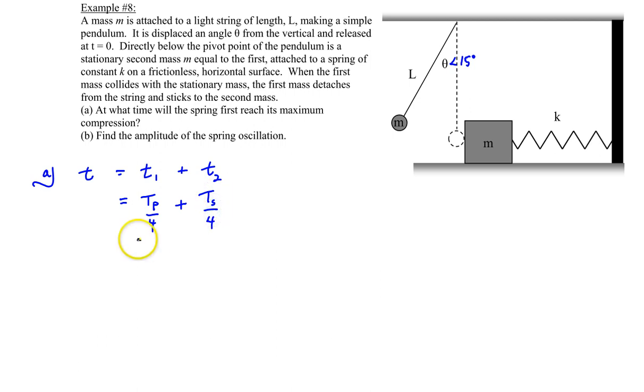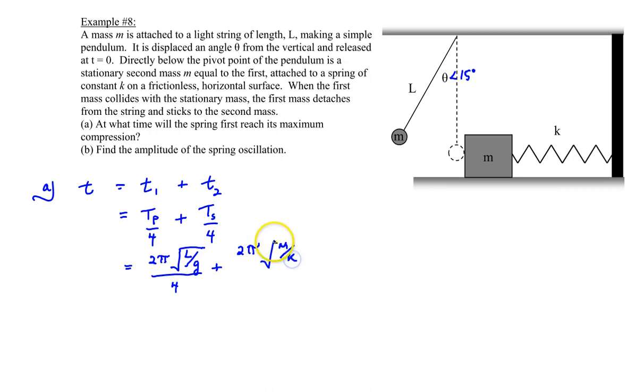Where we remember, hopefully, that the formula for a pendulum is 2π√(L/G), and we're going to do a fourth of that. And the period for a spring mass system is 2π√(M/K), and that's divided by 4.